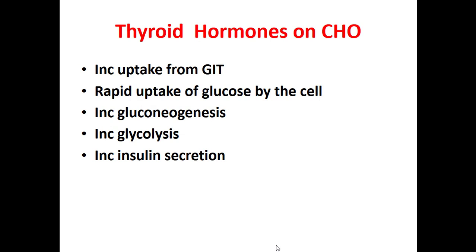Effects on carbohydrate metabolism: thyroid hormone increases uptake of glucose from the GIT, causes rapid uptake of glucose by cells, increases gluconeogenesis, increases glycolysis, and increases insulin secretion. Overall, thyroid hormone enhances glucose absorption from the GIT, pushes glucose into cells, forms glucose from other sources via gluconeogenesis, breaks down glucose via glycolysis, and because more glucose requires more insulin for cell entry, insulin secretion is increased.